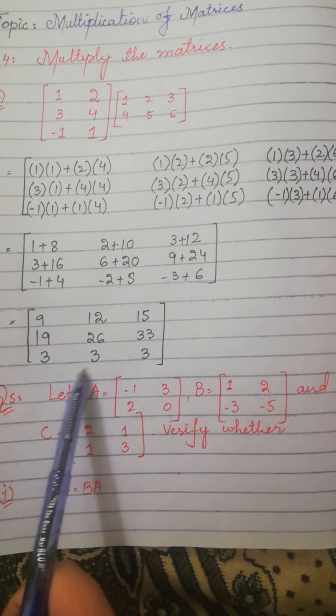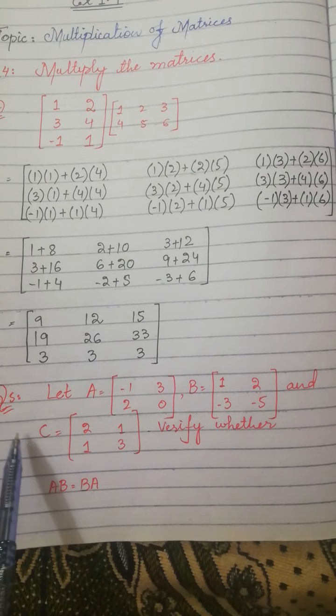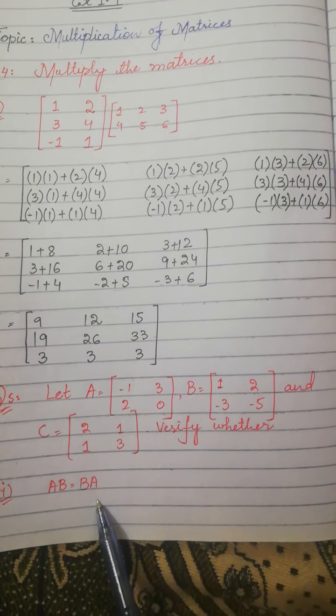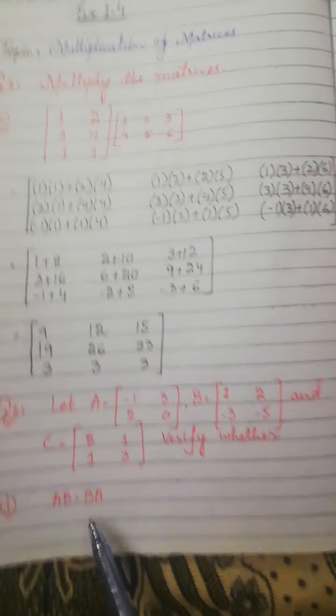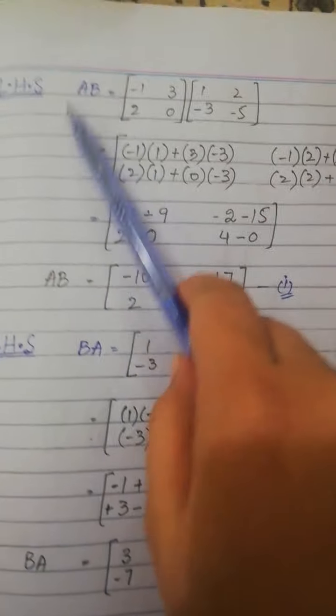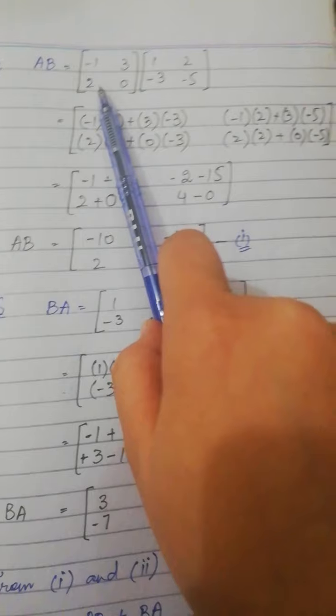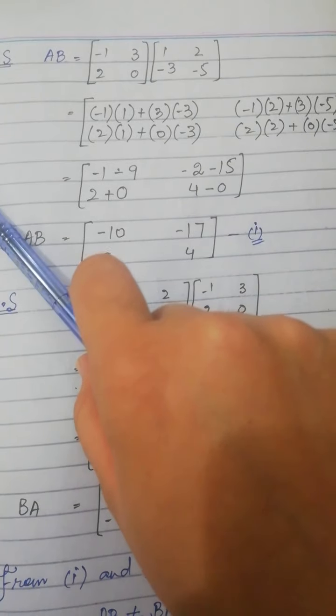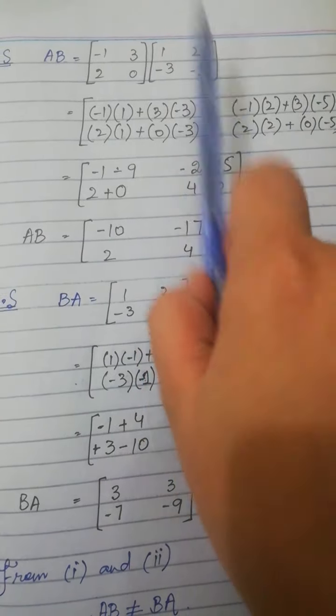Now question number 5. Let A equal this, B equal this, and C equal this. Verify whether AB equals BA. Here we will see if the matrices are compatible for multiplication by checking if the number of columns and rows are equal.